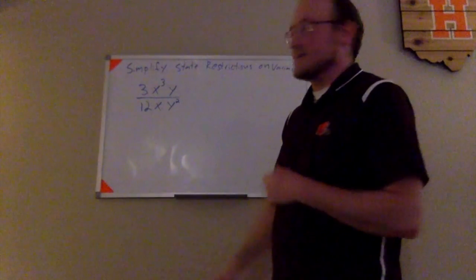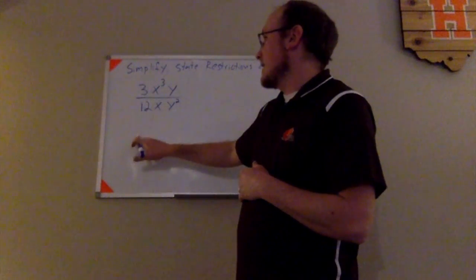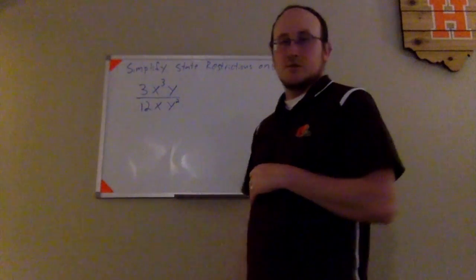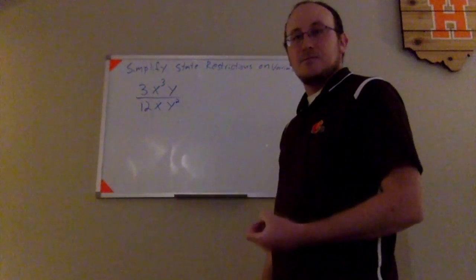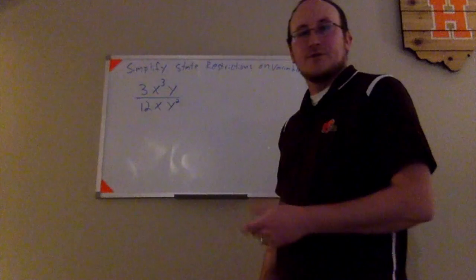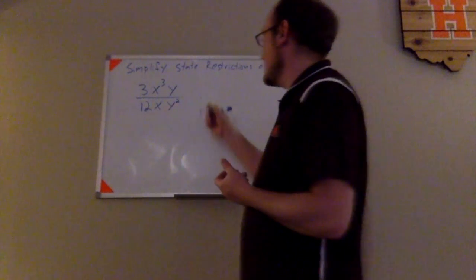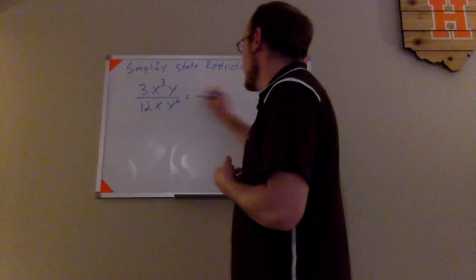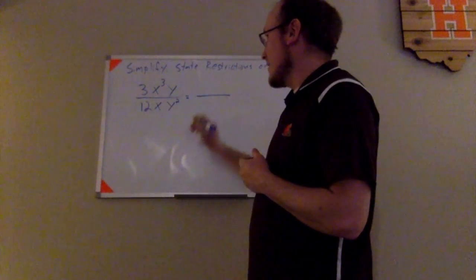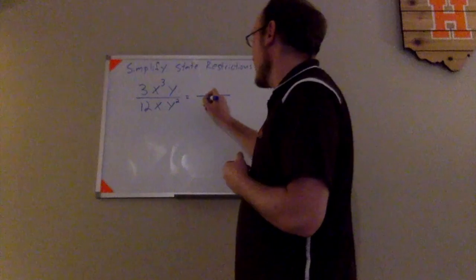The first thing I'm going to look at is the numerical factors of the terms. I see 3 and 12 and I can simplify the fraction 3 twelfths. 3 goes into both 3 and 12 evenly, so I'm going to go ahead and do that. That would produce a 1 in the numerator and a 4 in the denominator.